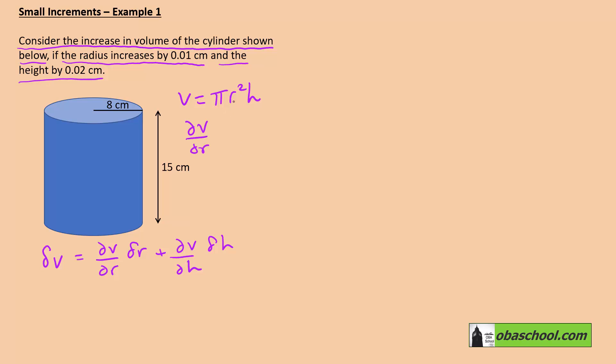And the pi and the h would be constants, so that's going to be 2 pi r h. And what about dV/dh? Well, that's just going to be pi r squared.